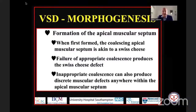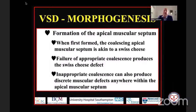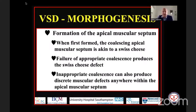Coalescence can also be abnormal so that discrete defects can exist anywhere within the ventricular septum. Now we're going to revert to the hearts themselves. Diane is going to show you an example first of a Swiss cheese defect, and then she's going to show you how you can also have discrete holes in other parts of the muscular ventricular septum.